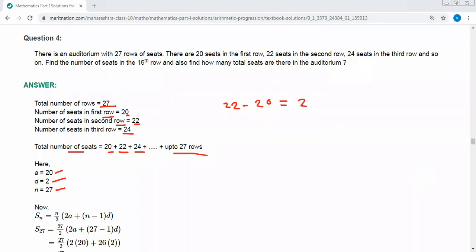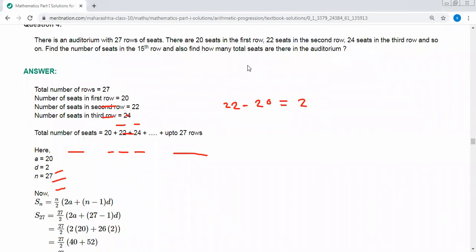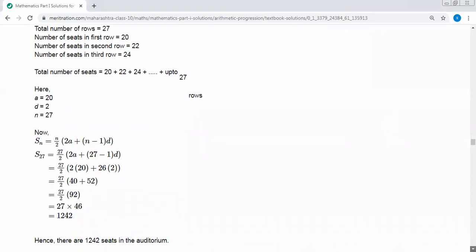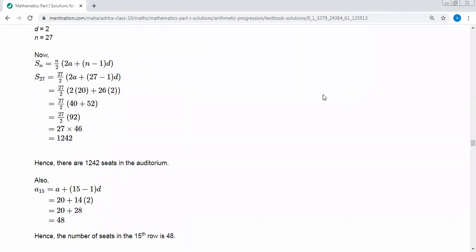Therefore, to use the formula, Sn equals n by 2 in bracket 2a plus n minus 1 into d. This is Sn for sum of n terms. To find the sum of 27 terms.